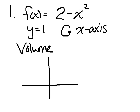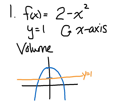2 minus x squared is a parabola shifted up, facing down. Y equals 1 is a horizontal line at 1. I'm revolving my function around the x-axis. I'm going to carefully sketch in my shaded region and ask yourself: is this a disk or is it a washer? If you take this shape and rotate it about this line, there's going to be empty space between the shaded region and the x-axis, creating the washer method.